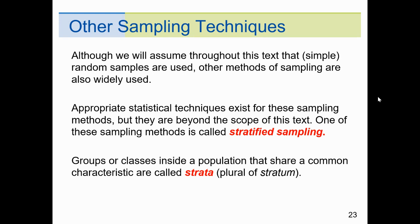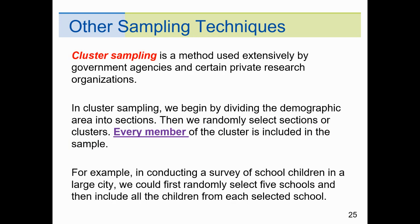Although we assume throughout this text that simple random samples are used, other methods of sampling are also widely used, and one of those is called strata. Strata, and the last one will be cluster. At least sometimes I can use, and I'll do my best to point out the difference. All right? Stratified sampling, groups or classes inside a population that share some common characteristic are called strata, plural of strata. All right? Cluster sampling, used extensively by government agencies and certified research for firms, organizations. In cluster sampling, we begin by dividing the demographic area, the sections, and then we randomly select sections or clusters. Keyword here is every member of the cluster is included in the sample. For example, conducting a survey of schoolchildren in a large city, we can randomly select five schools, and then include all the students. That's the keyword, all of the students.